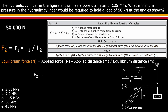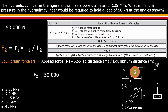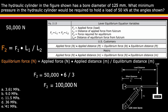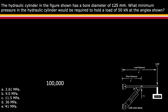The equation can be rearranged to solve for F2, the equilibrium force. F2 equals F1 — the applied force of 50,000 newtons — times L1, the applied distance of 6, divided by the equilibrium distance of 3. Calculating those numbers, the equilibrium force F2 is equal to 100,000 newtons.